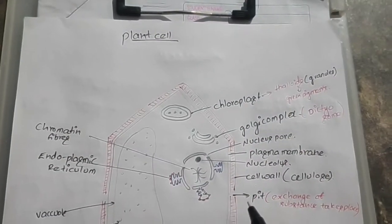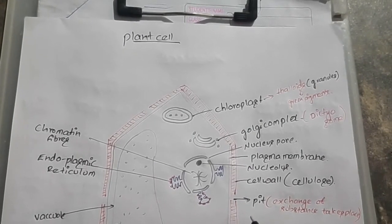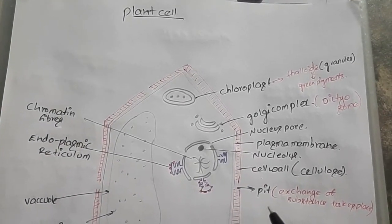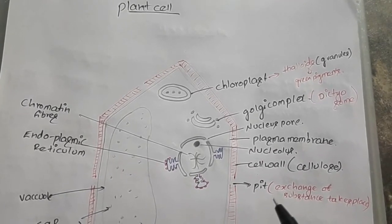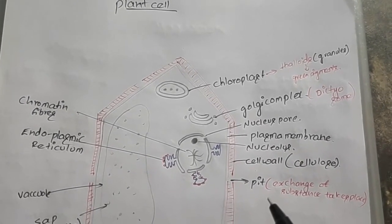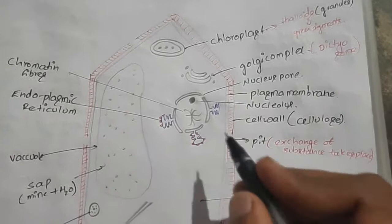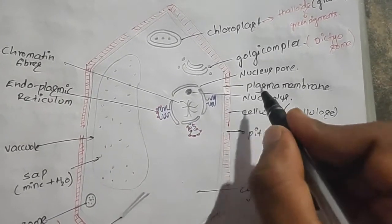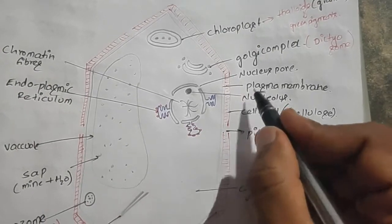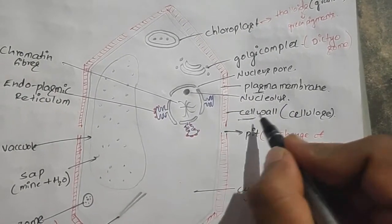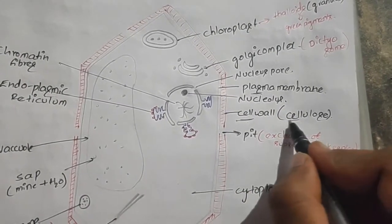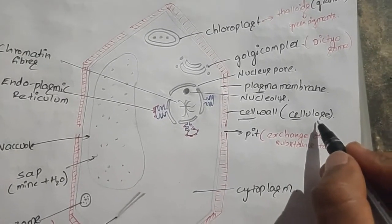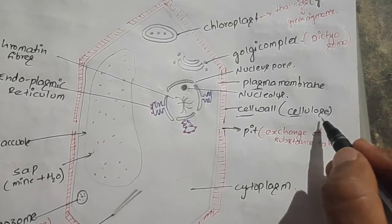Plant cells are normally hexagonal or polygonal in shape. The outermost layer of the cell is the plasma membrane. Outside the plasma membrane is the cell wall, which is made up of cellulose. This cellulose is a polysaccharide and contains a chain of glucose monomers.